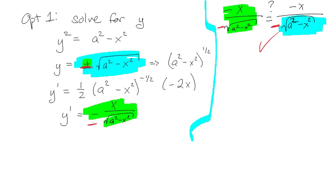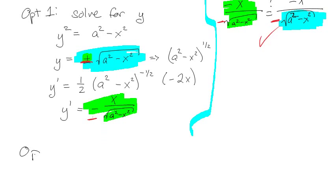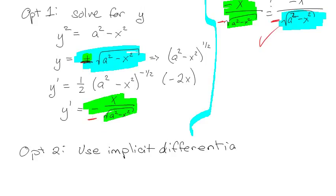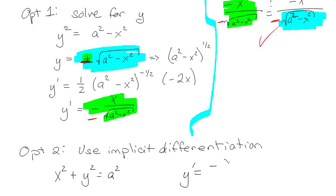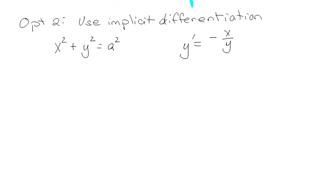Okay, so I promised a second option. Option 2 is to use implicit differentiation — the only reason I'm doing this is good practice. So I had x² + y² = a², and y prime equals −x over y. By implicit differentiation, I'm going to take d/dx of both sides. The d/dx of x² is 2x, and the d/dx of y² is 2y · y prime, because y is a function of x.